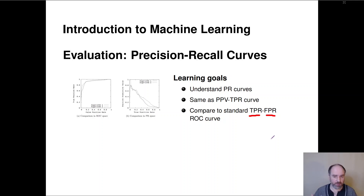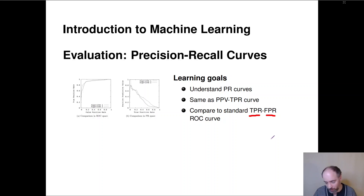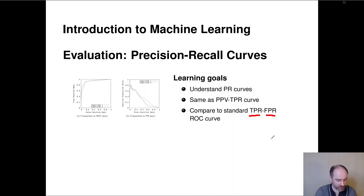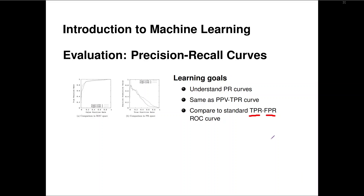For precision-recall curves, we plot the positive predictive value versus the true positive rate. We'll find that this is a good — and recommended — alternative in imbalanced situations where the negative class is much larger than the positive class in binary classification. So let's start.